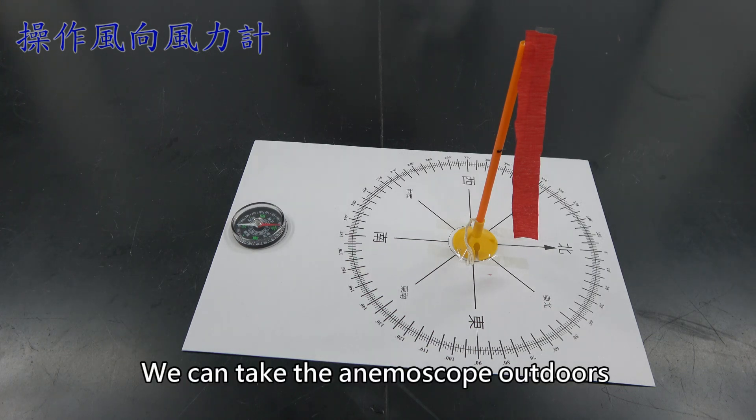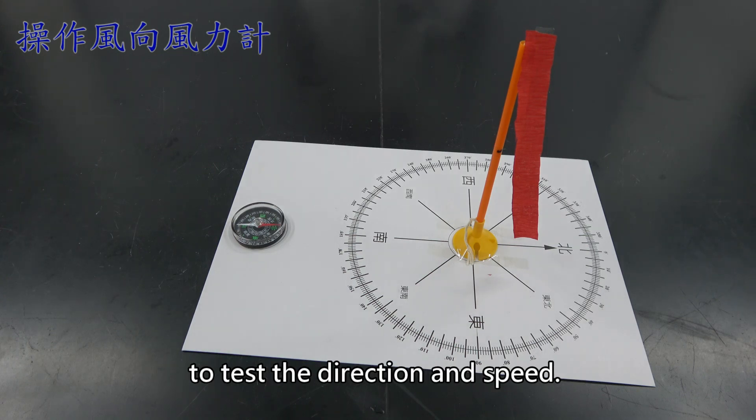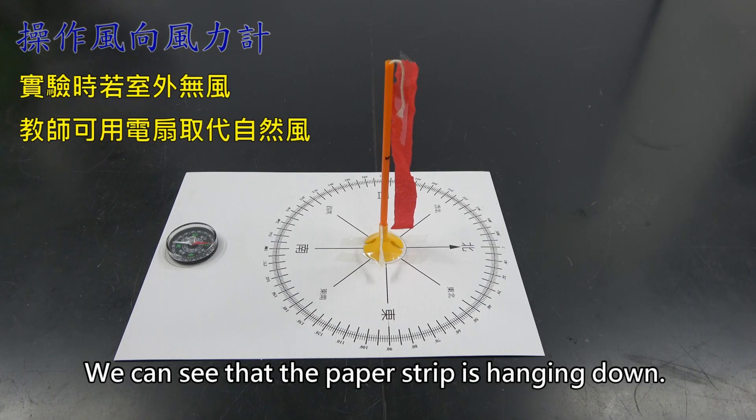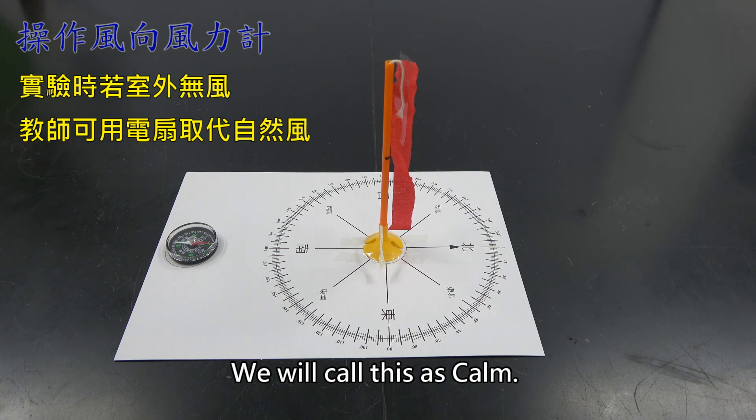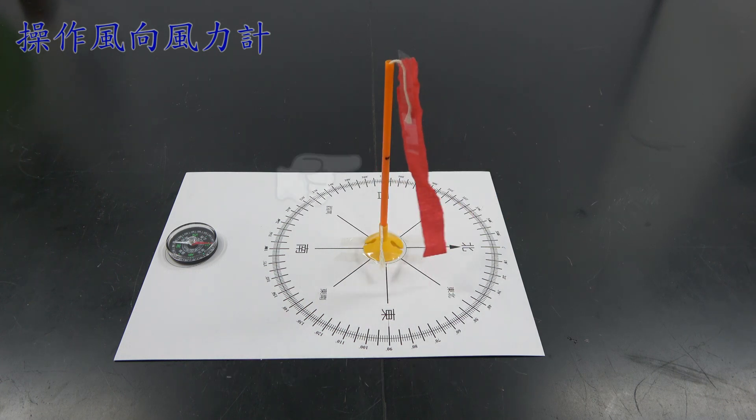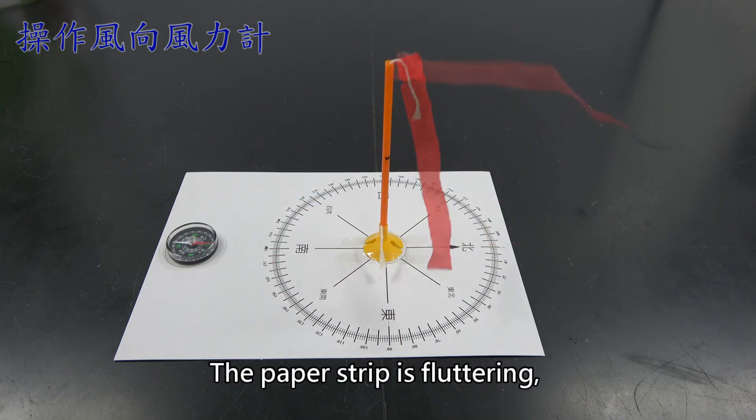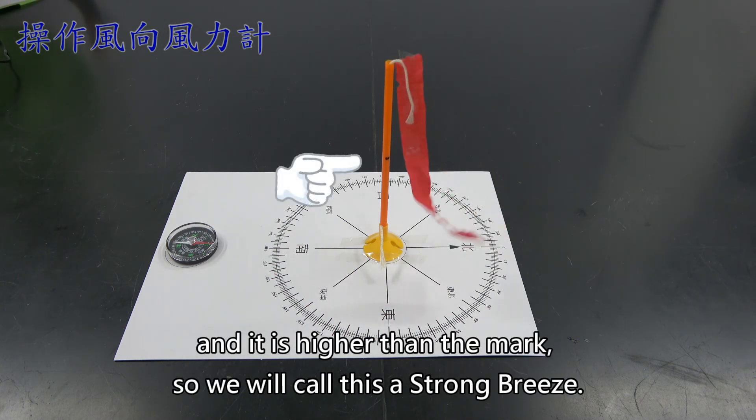The real north should be in this direction. The direction sheet is just a convenient way for students to observe. We can take the anemoscope outdoors to test the direction and speed. We can see that the paper strip is hanging down. It is not fluttering. We will call this as calm. The paper strip is fluttering, but it is lower than the mark. In times like this, we call this a breeze. The paper strip is fluttering and it is higher than the mark, so we call this a strong breeze.